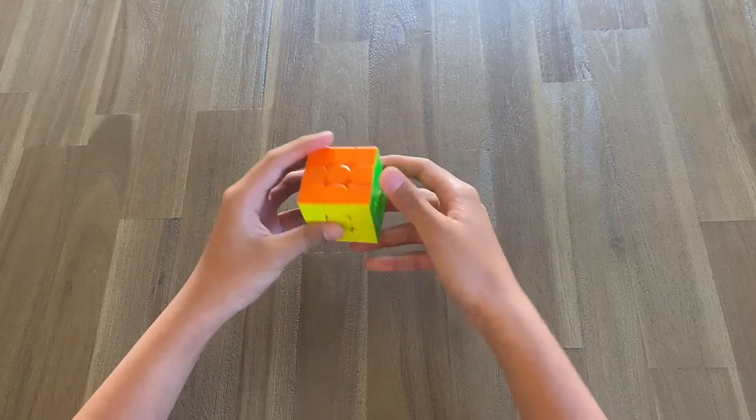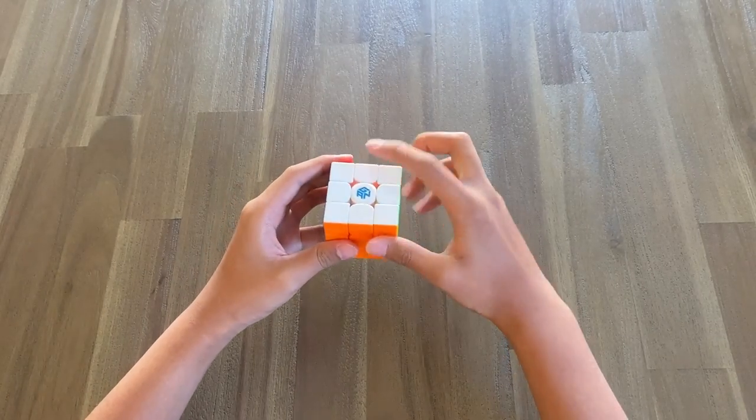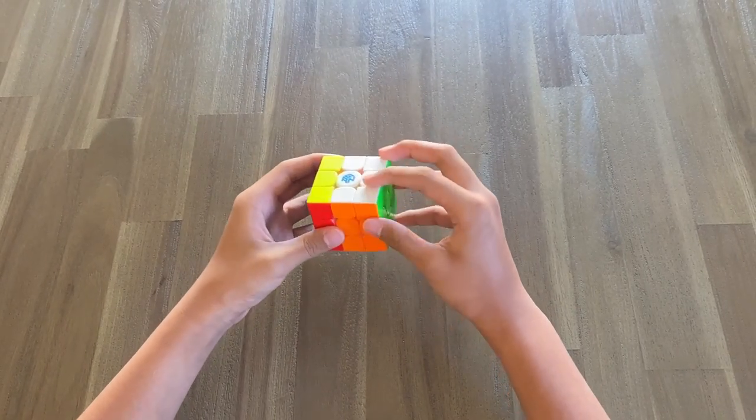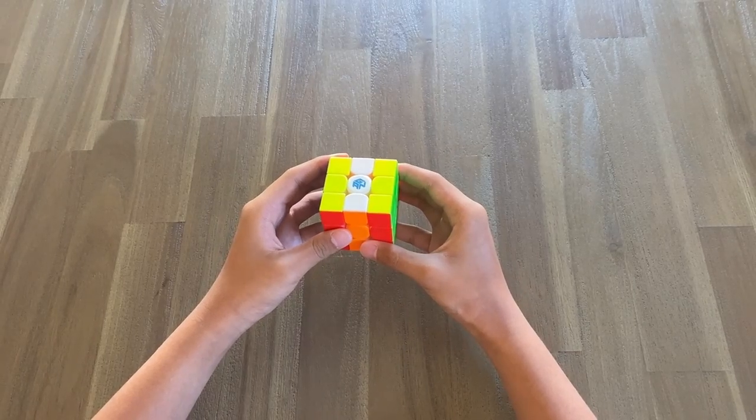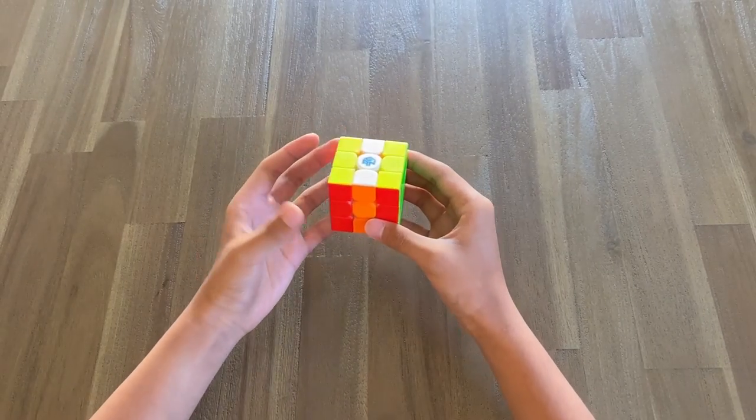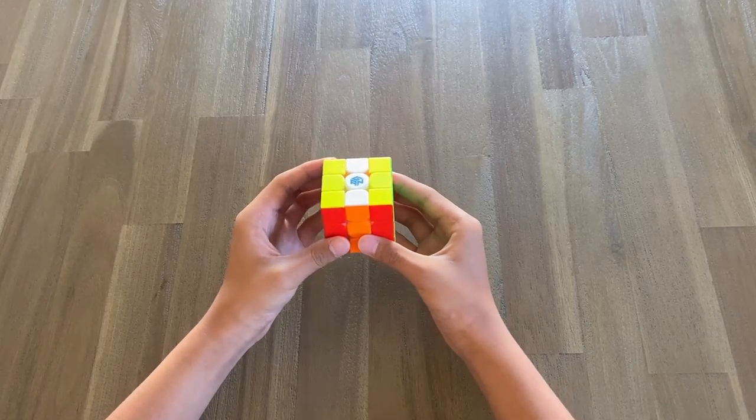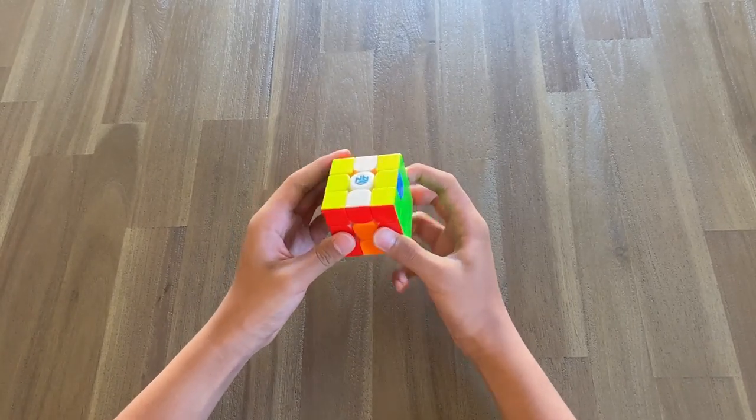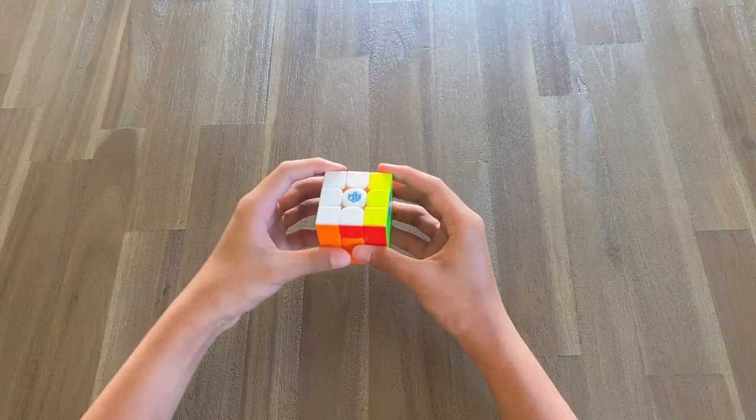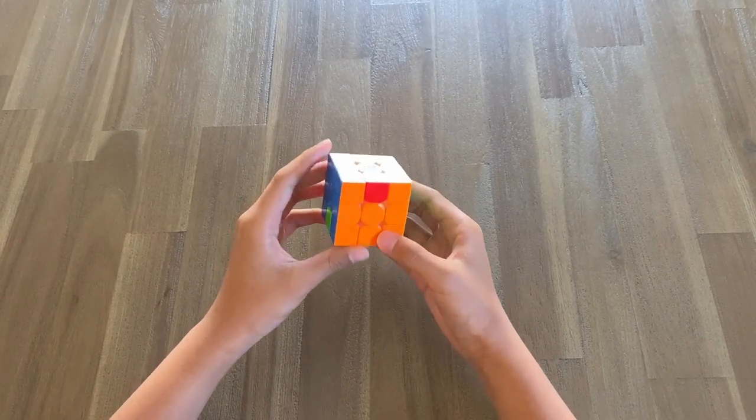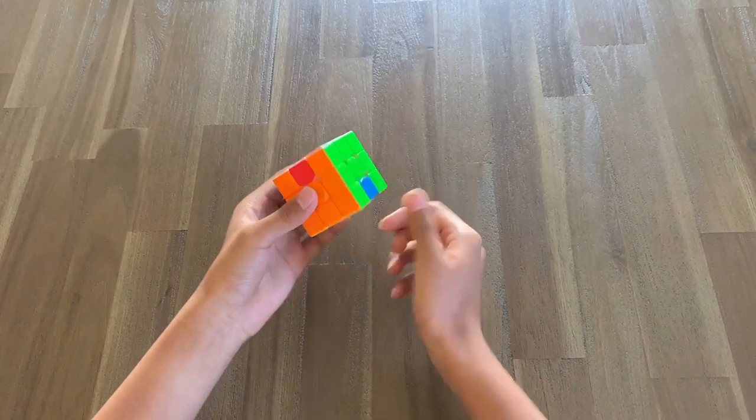We want to swap this edge with this edge and this edge with this edge. We can move this one to the top and this one to the top. Now, we can effectively use an H perm to swap the edges that we want without messing up anything else. And now, we just move it down. As you can see, we've swapped the edges that we want.